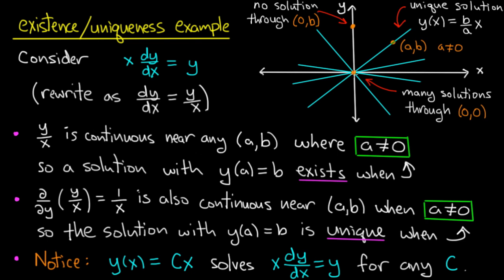So the take-home message is: if the hypotheses of the existence uniqueness theorem are not satisfied, then anything can happen.